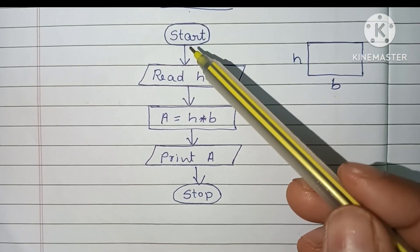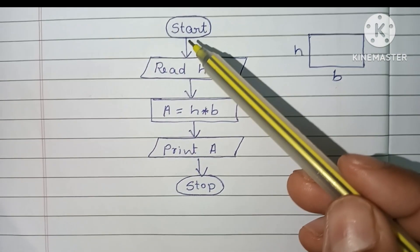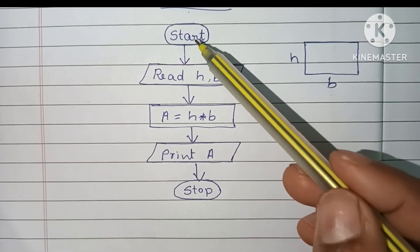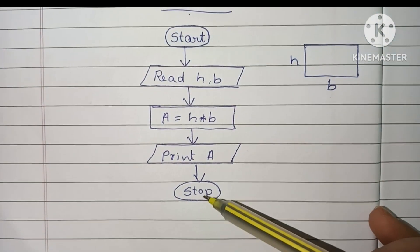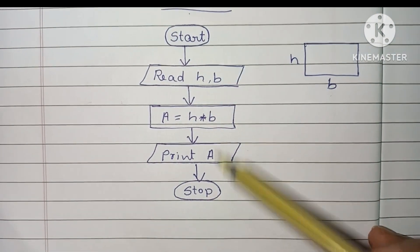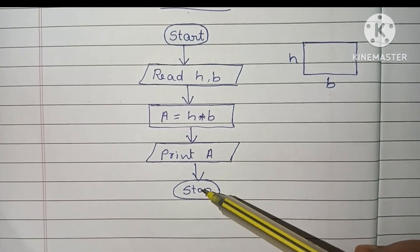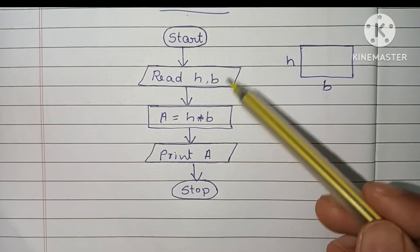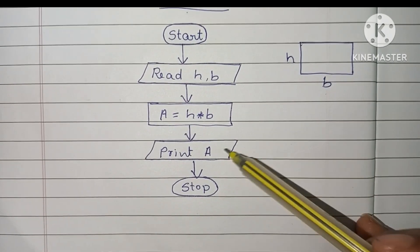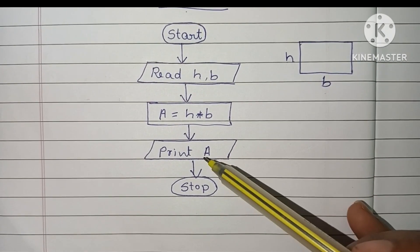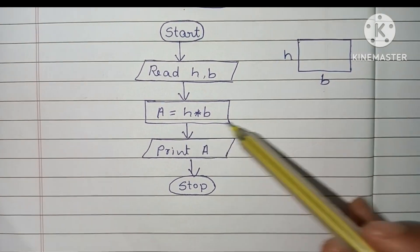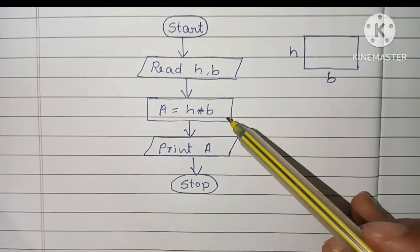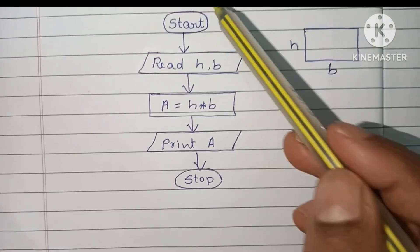This is the complete flowchart to find the area of a rectangle. To summarize the shape rules: start and stop statements are always written within oval shapes, input and output values are always written within parallelogram shapes, and calculations are done within rectangular shapes.